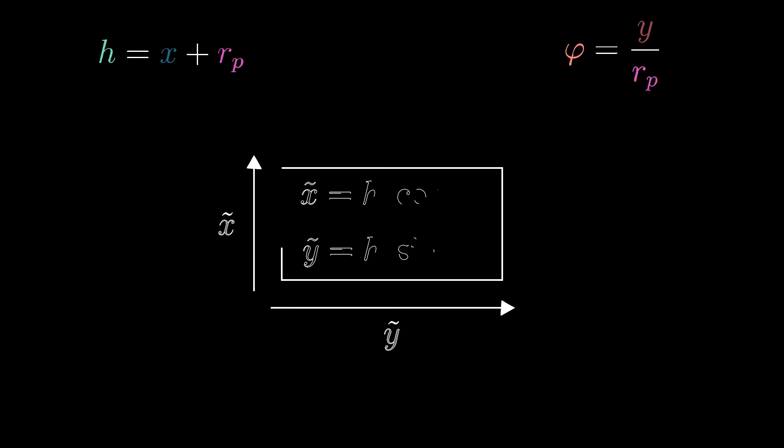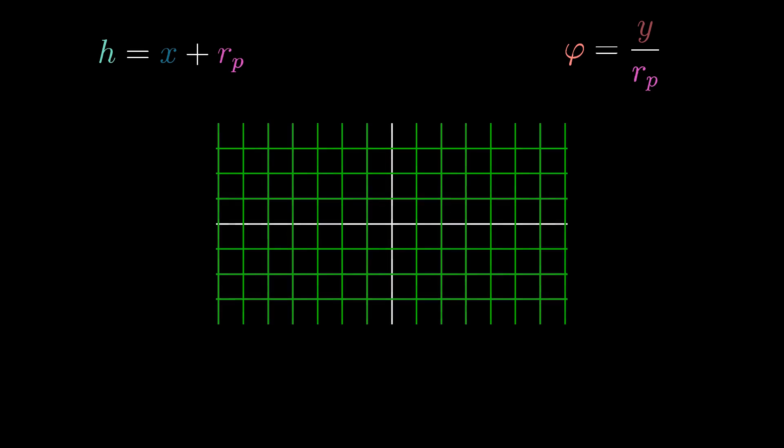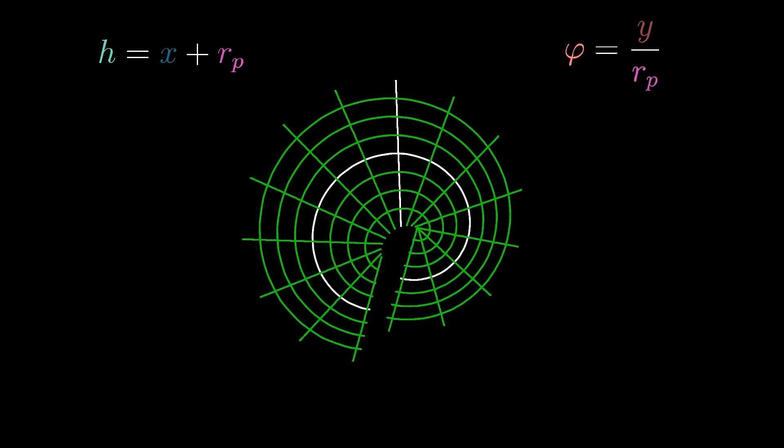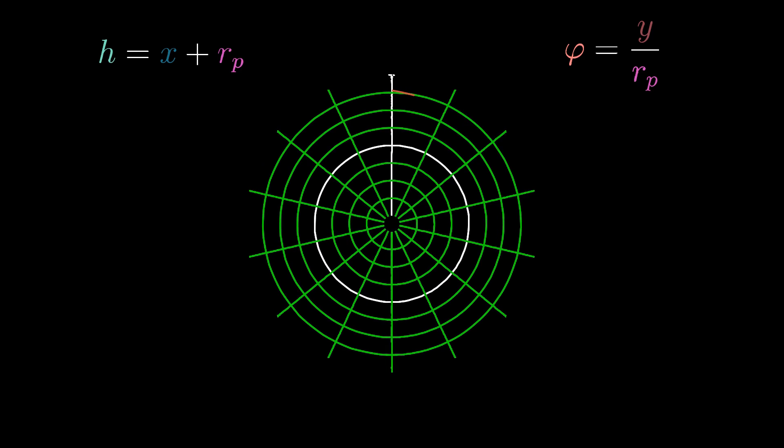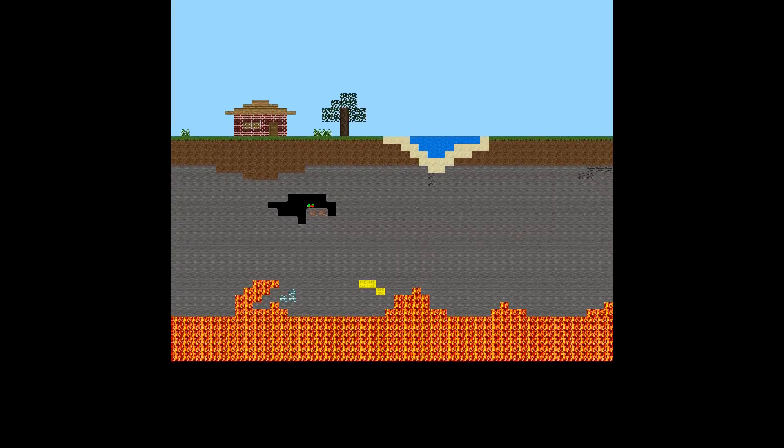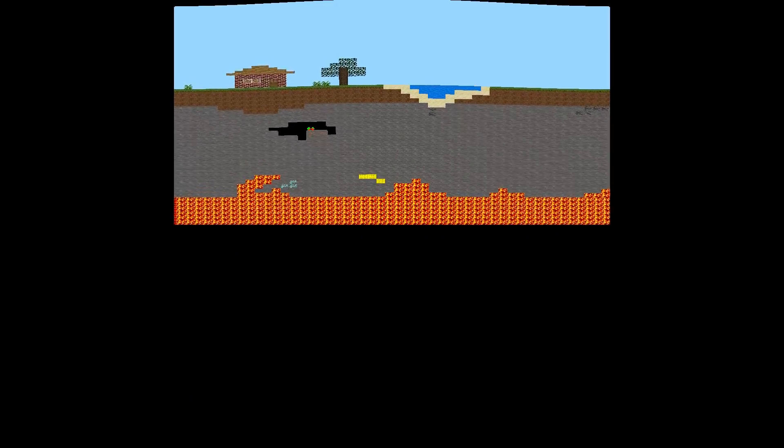Having H and Phi we can now just apply the commonly known functions for transforming from polar to cartesian coordinates. However when applying this transformation to the flat plane the blocks on the top get stretched and the ones close to the center get squashed. When looking at the cross section this makes the house and tree look very weird.